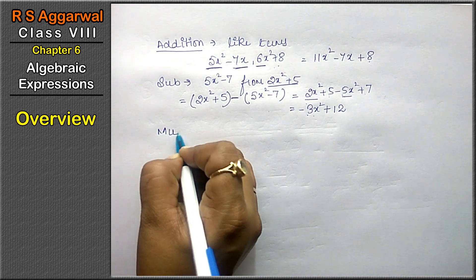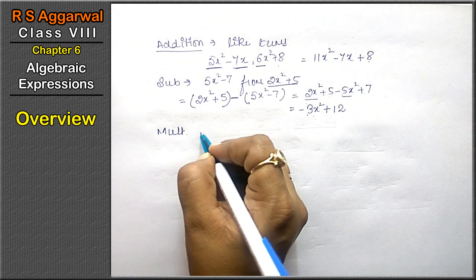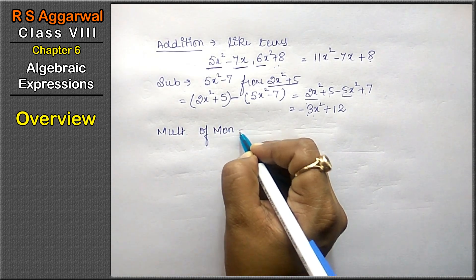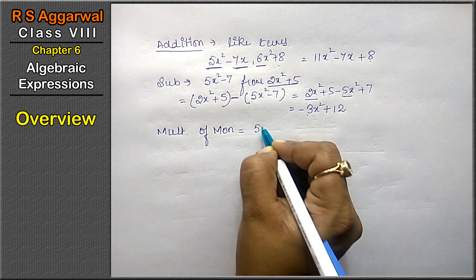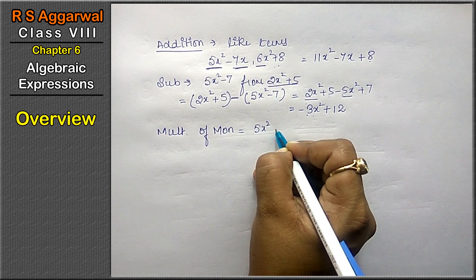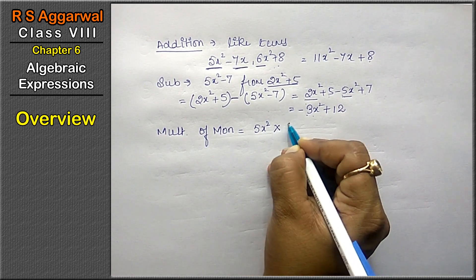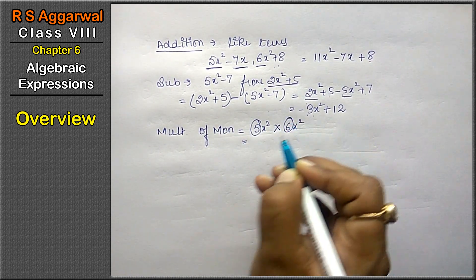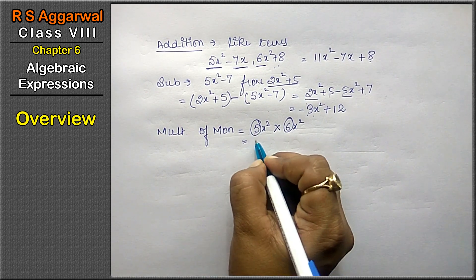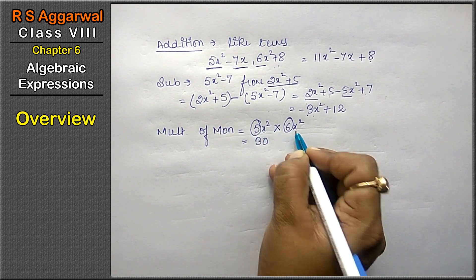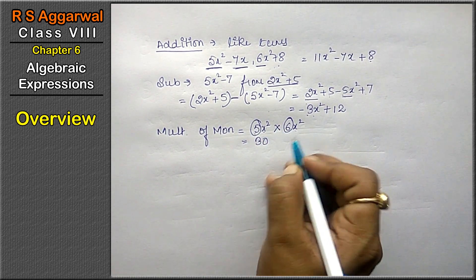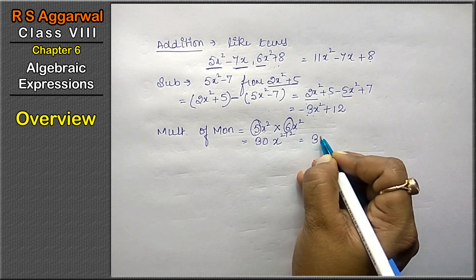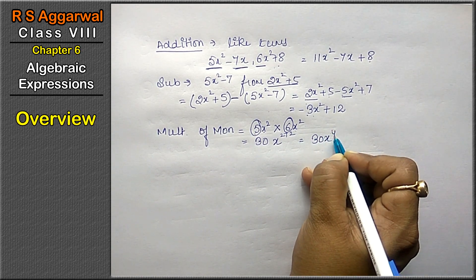Now, multiplication. Multiplication of monomials. For monomial multiplication, if I say 5x² multiply by 6x², then constant multiplies with constant, 5 times 6 is 30, x into x² into x². Friends, in multiplication powers add, so answer will be 30x⁴.